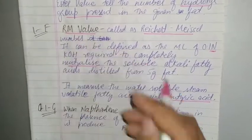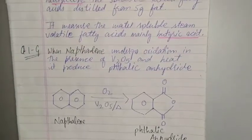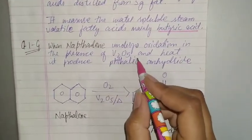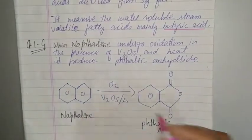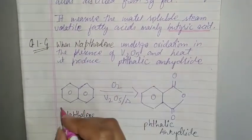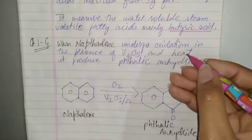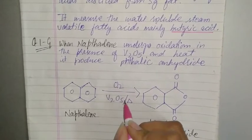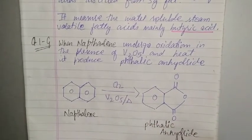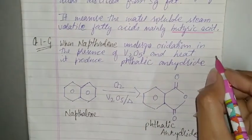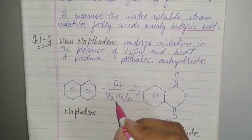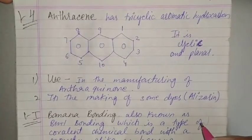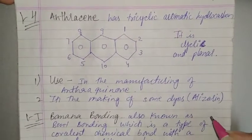When naphthalene undergoes oxidation in the presence of V2O5, what is the product formation? We write the reaction. Naphthalene undergoes oxidation in the presence of V2O5 and heat, it produces phthalic anhydride.